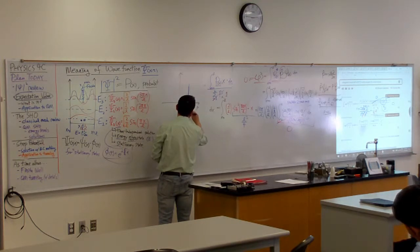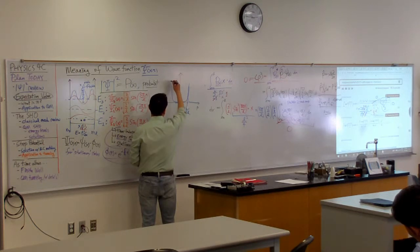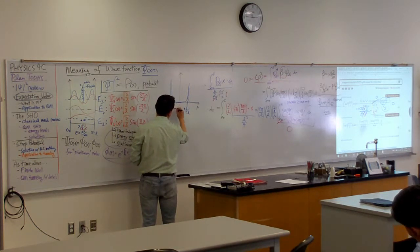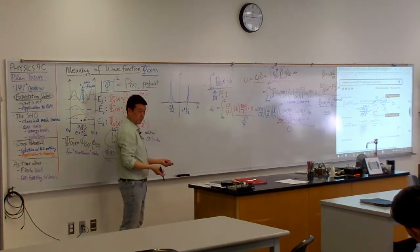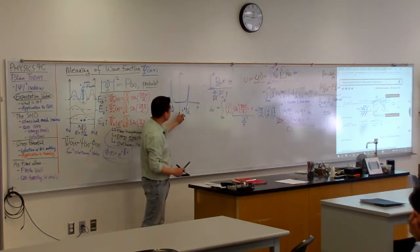and another state at the value of minus Nℏ over 2L. So that's why when you took the average of these two values, you got zero.